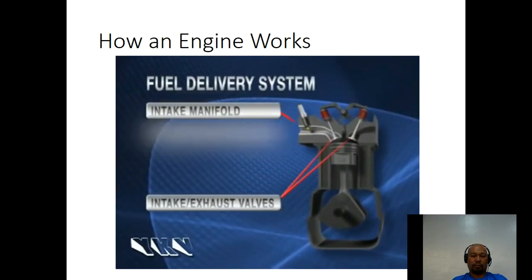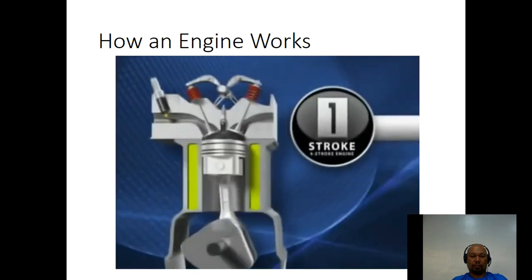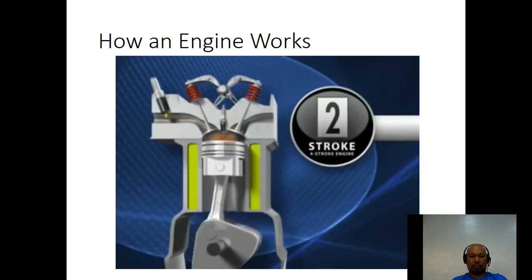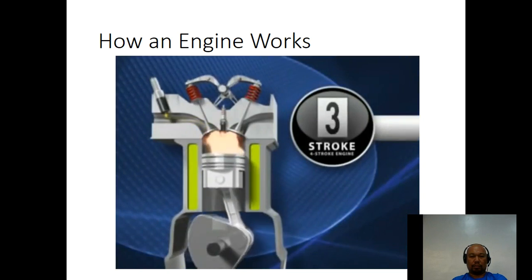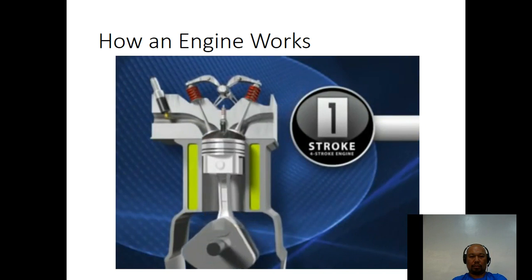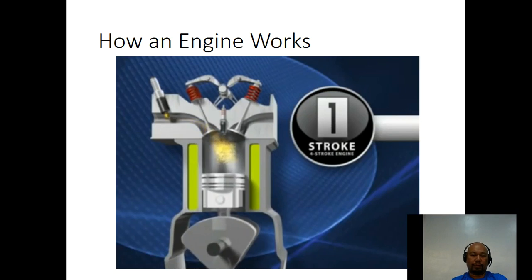The fuel delivery system consists of an air intake manifold, valves (intake and exhaust), a fuel injector, and a spark plug. A four-stroke engine is called a four-stroke because four up-and-down motions are needed to complete the cycle. In the first stroke, the piston travels downward as the intake valve opens, and a mixture of air from the atmosphere and a metered amount of gas from the electronic fuel injector enter the cylinder.